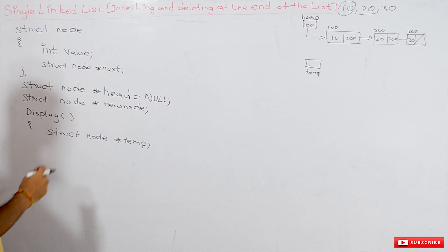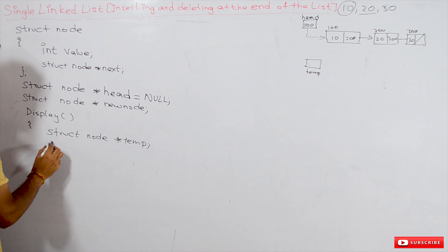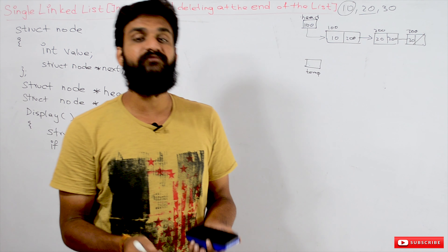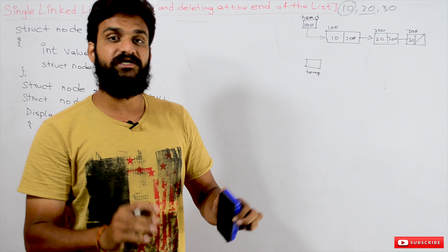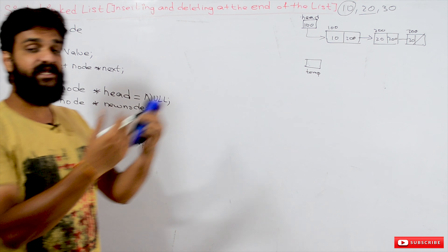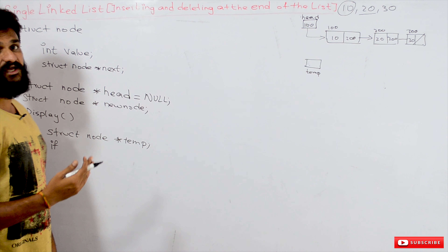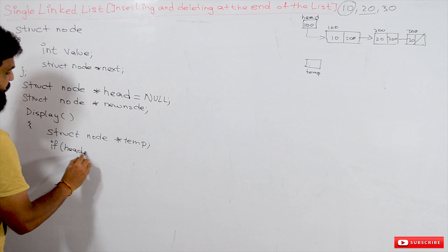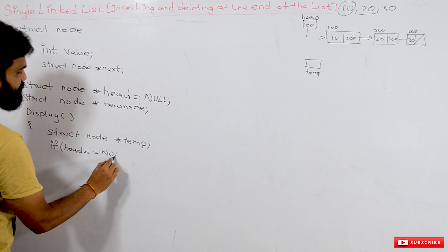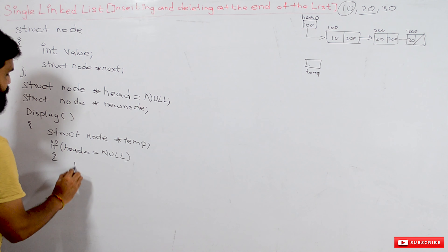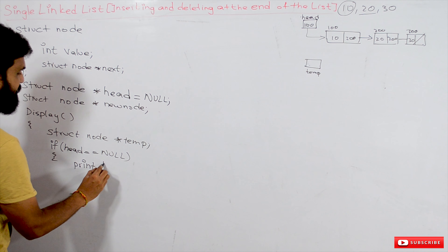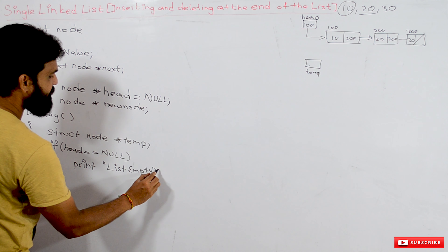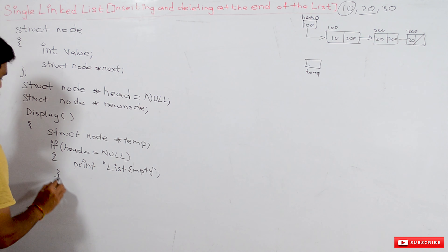Setting temp->next = null means 200->next is now null. The last node 300 has been freed and node 200 is now the last node. The else block completes and the delete function ends. This covers all three deletion conditions for a singly linked list with end deletion.